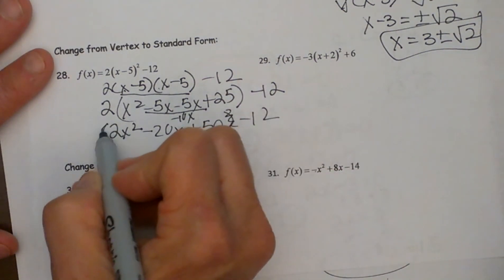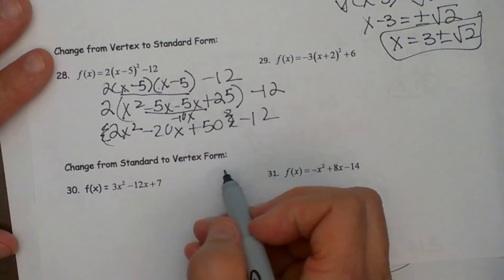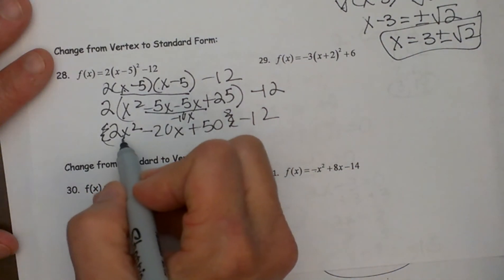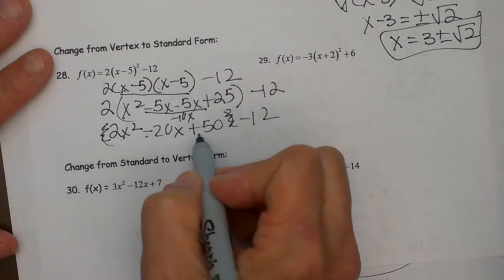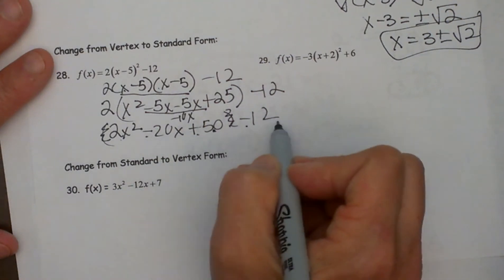I really don't need those parenthesis because once you distribute you are done with the parenthesis. So now I am going to have 2x squared minus 20x plus 50 minus 12.